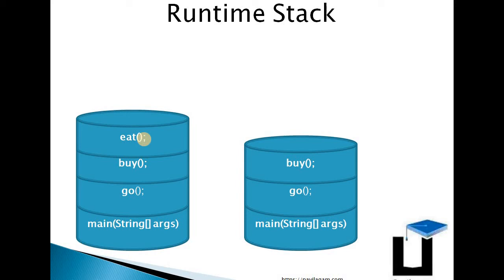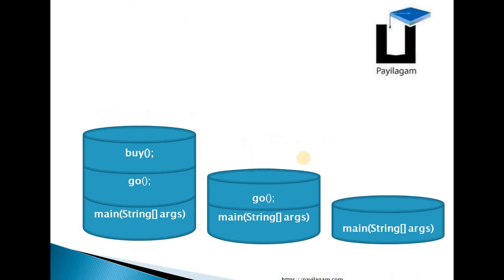The robot runs: walk, go, and eat. The current top method on the stack is eat. The eat method, after executing, will be removed from the stack — its activation record is removed. Now the stack has: main, go, buy. Once eat is done, buy is also removed, and go is removed. The JVM removes each activation record from the stack as each method completes.